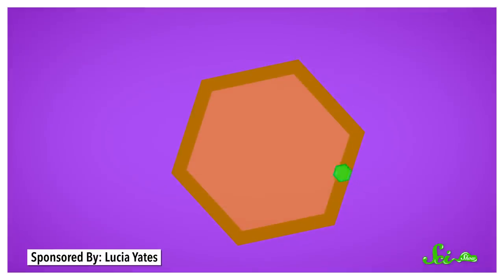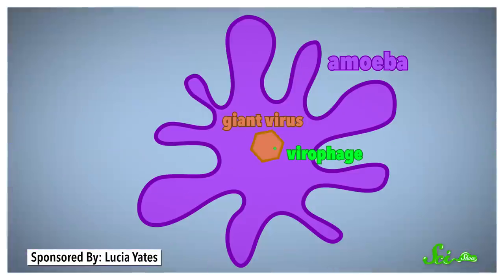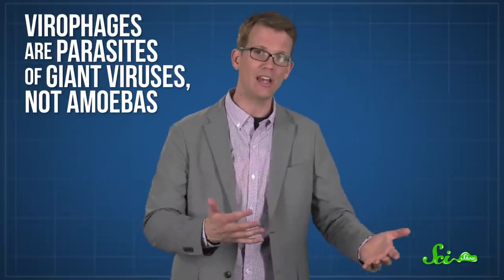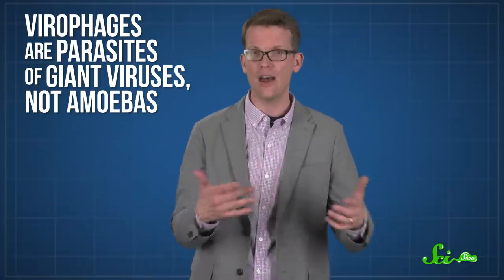And in this case, the hosts are also viruses. Mimiviruses can't copy DNA and protein on their own either, and have to infect an amoeba to reproduce. That's where the virophage sneaks in. It infects the mimivirus while it's infecting the amoeba and borrows the giant virus factory. So instead of making more giant viruses, the amoeba churns out virophage copies instead. This directly harms the giant virus and its efforts to reproduce, which is what leads researchers to say that virophages are parasites of giant viruses, not of amoebas.